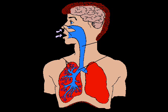Smooth muscle in the walls of the trachea, bronchi, and bronchioles allows their diameter to be controlled. During exercise, the smooth muscle relaxes, making the tubes wider. This means there is less resistance to airflow and air can move in and out of the lungs more easily.